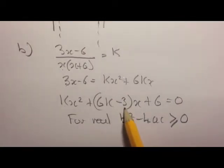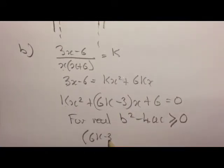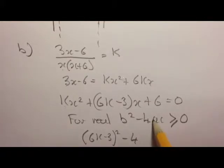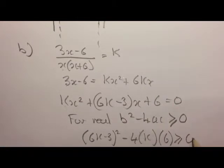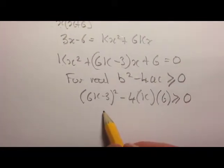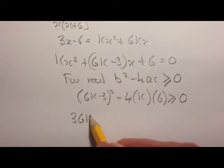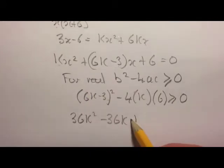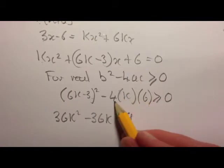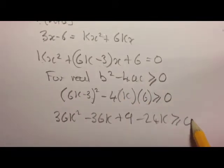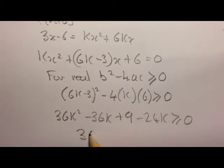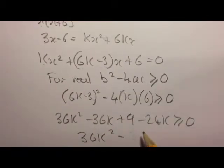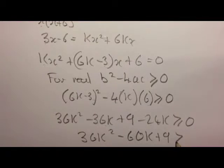So let's take the b part: we've got 6k minus 3 squared minus 4 lots of a, which is k, times c, which is 6, is greater than or equal to 0. Expand this out and we get 36k squared minus 36k plus 9 minus 24k is greater than or equal to 0, or 36k squared minus 60k plus 9 is greater than or equal to 0.